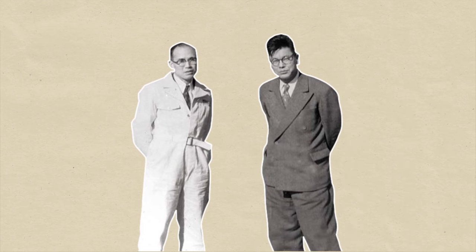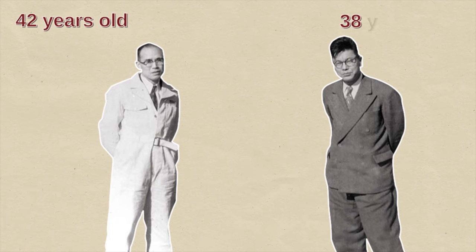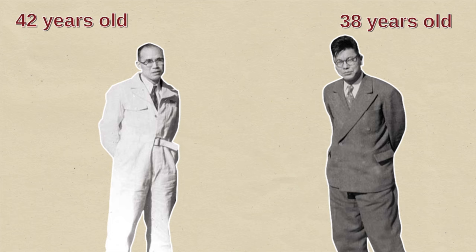Now it's August 1949. Soichiro meets Takeo Fujisawa through mutual acquaintance. They have crossed paths before when Takeo worked at the Nakajima Aircraft Company where Soichiro supplied piston rings. Soichiro is now 42 years old. Takeo 38. They hit it off immediately.